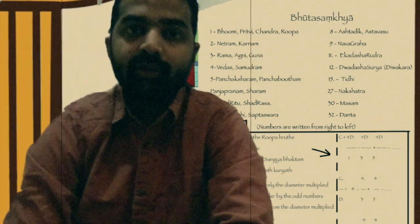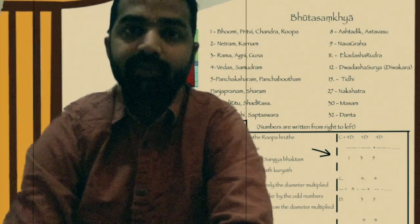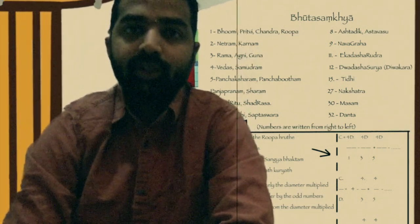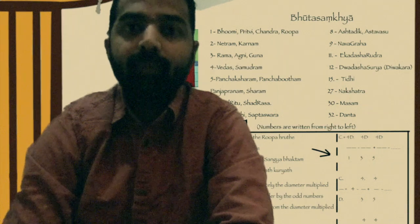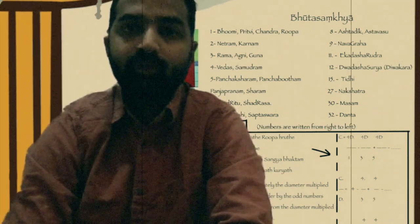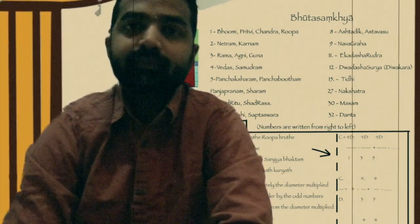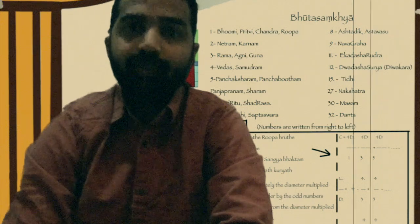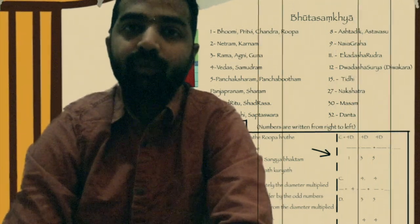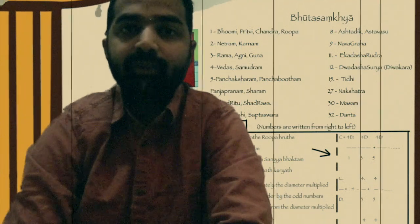Dvadasha Surya — anything that represents Lord Sun: Surya, Aditya, Bhaskara, Divagara, etc. — represents number 12. Siti represents number 15. Nakshatra represents number 27. Masam — one Masa has got 30 days — so, Masa represents number 30.